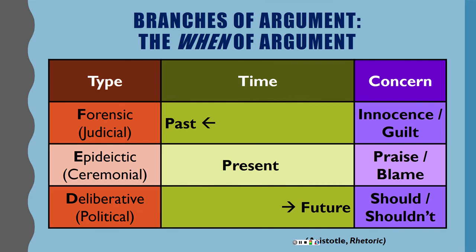The last realm is the deliberative realm, dealing with matters of the future — questions of should or shouldn't. What should we do as Athenians? What should we do as Americans? How do we know this is the best course of action? When dealing with matters of the future, it's often still in that realm of uncertainty. We can't predict the future, but we have to do our best to guess. Deliberative is the root of where we get deliberation — we're trying to deliberate about what we should do in any given scenario.